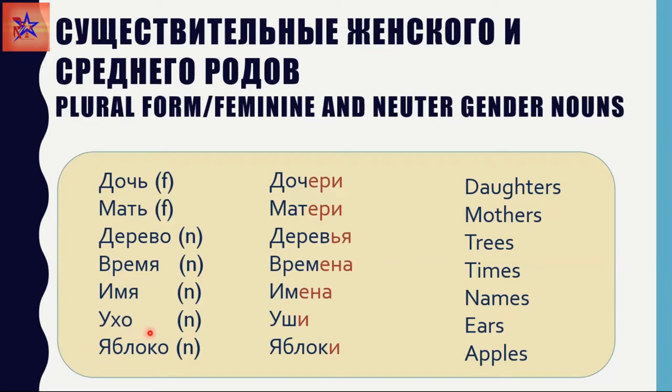Ухо becomes Уши — you see the letter has changed. Яблоко becomes Яблоки.